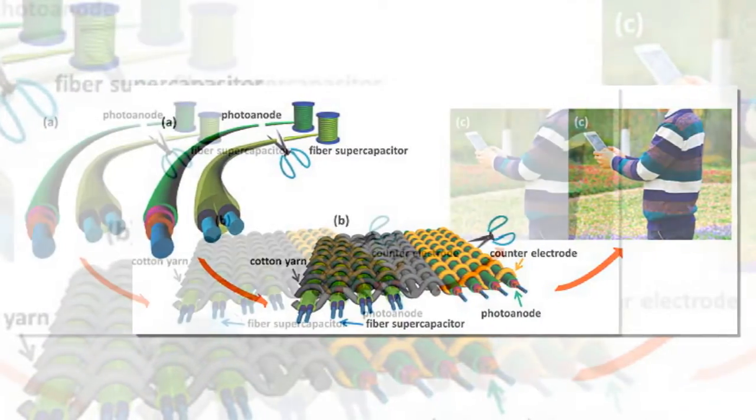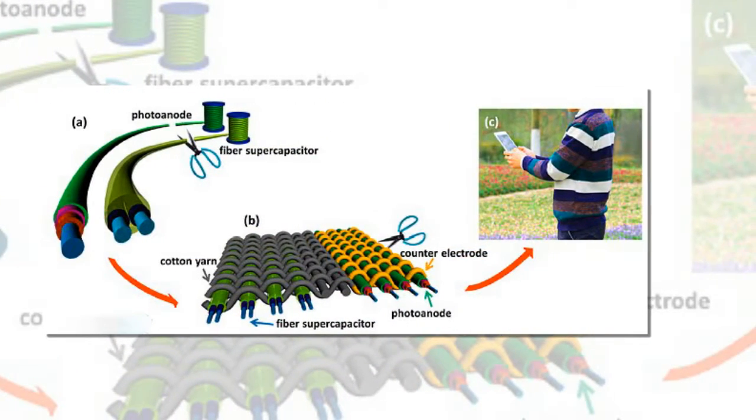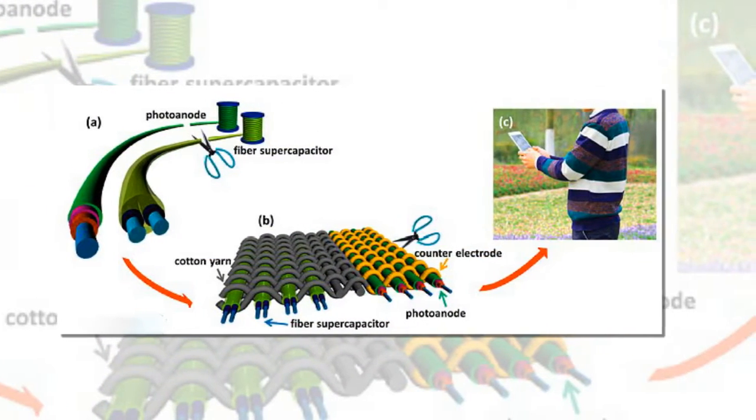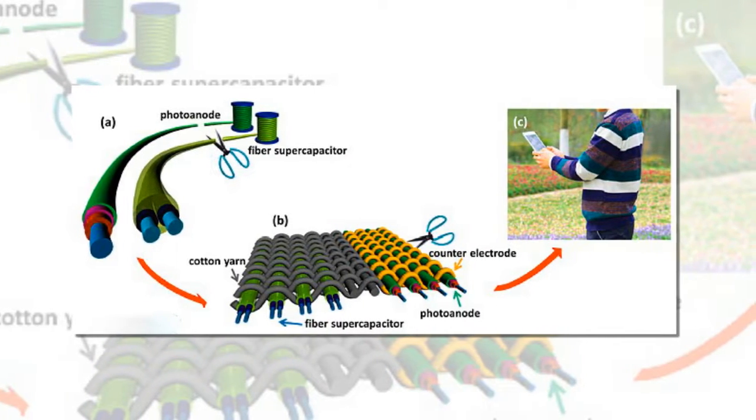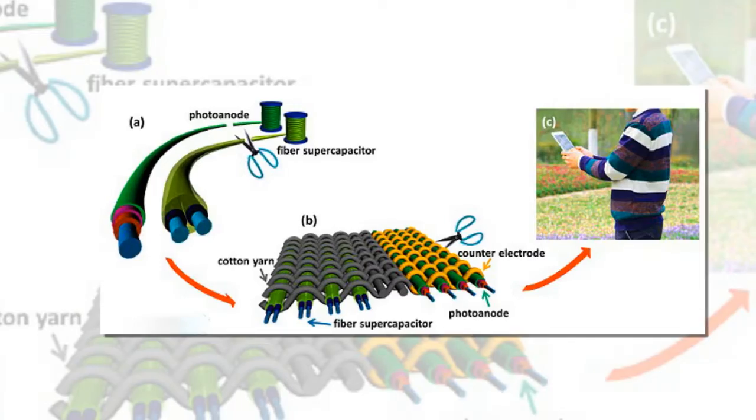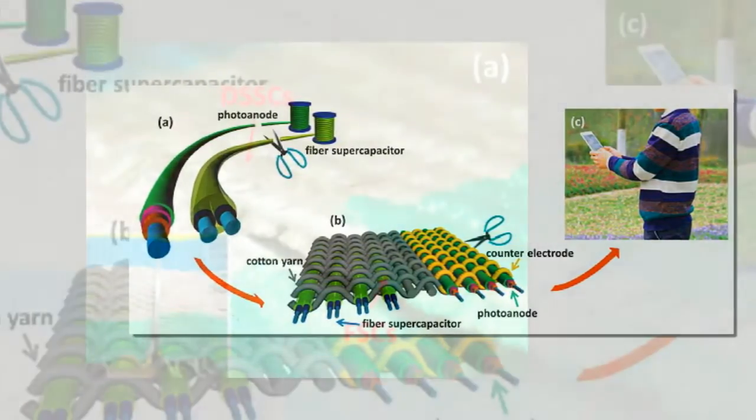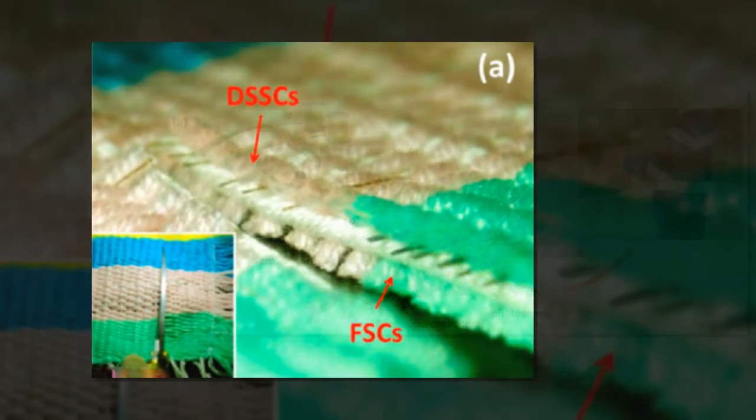Before now, researchers have tried to create fibers to incorporate in garments to supply energy. But many of these couldn't withstand clothing manufacturing, particularly weaving and cutting. Now scientists from Tianan University in China say they have created a new fiber suitable for sewing into wearable textiles that can capture and release solar power.